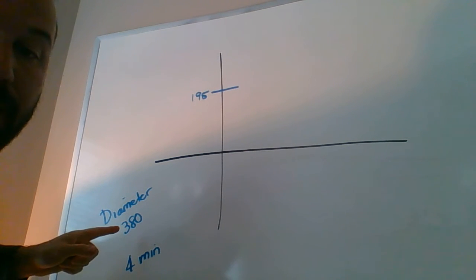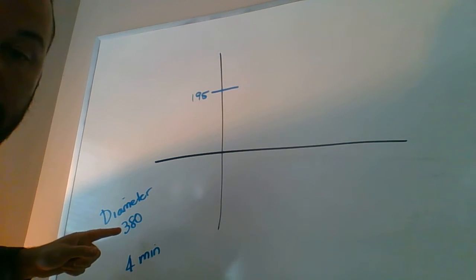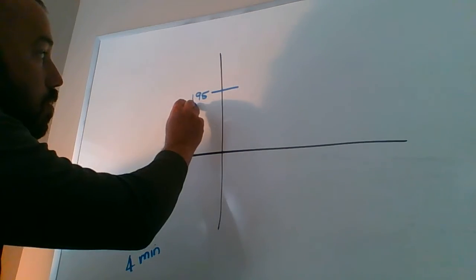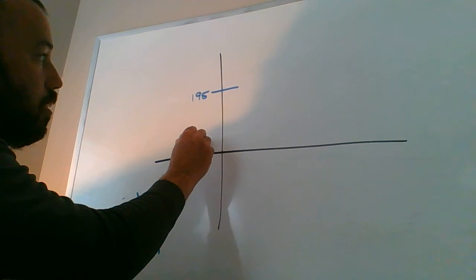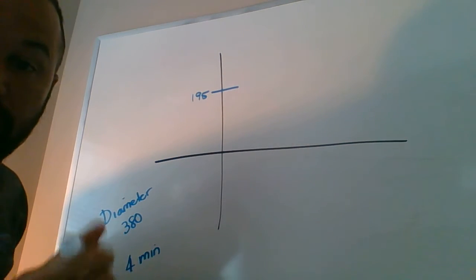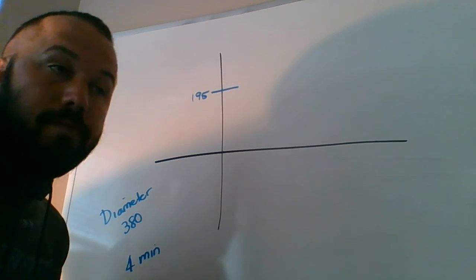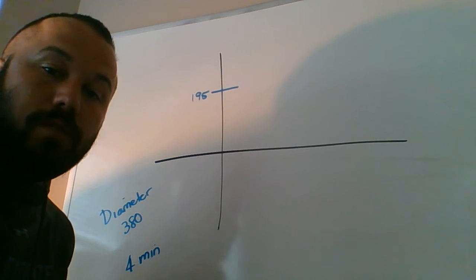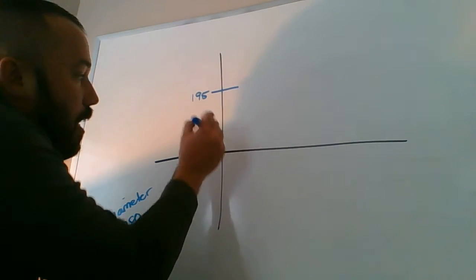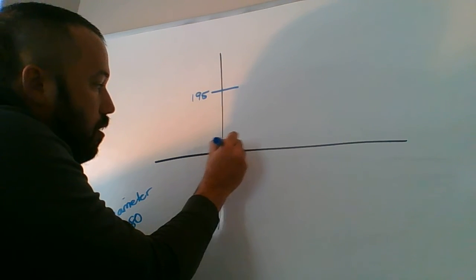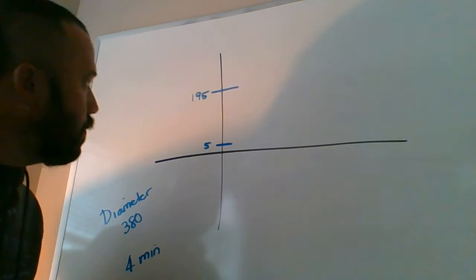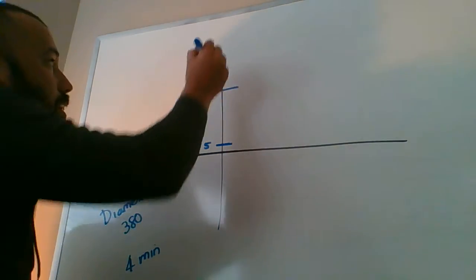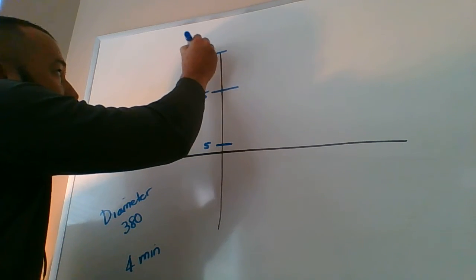So if the diameter of the wheel is 380, the radius is 190. That means this thing goes up 190 and down 190 from the center. Obviously this wheel has to be above the ground, or else when you rode it you'd be hitting the ground. So if you go down 190, you'd be at 5 - that's the lowest point or where you get on. If you go up 190, you'd be at 385, and that's the top.